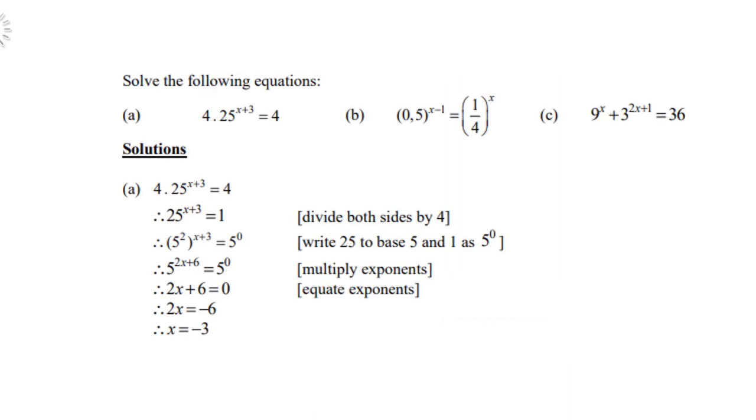Let's solve the following equations. A: 4 times 25 to the power of x plus 3 equals 4. Now the first step is to divide both sides by 4, and you get 25 to the power of x plus 3 equals 1.